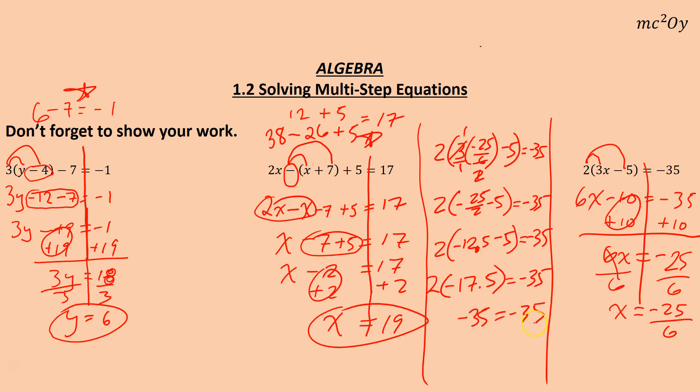So negative 35 equals negative 35. We are good. A little ugly, but that's the correct answer. All right, that's all there is to it. Thank you.